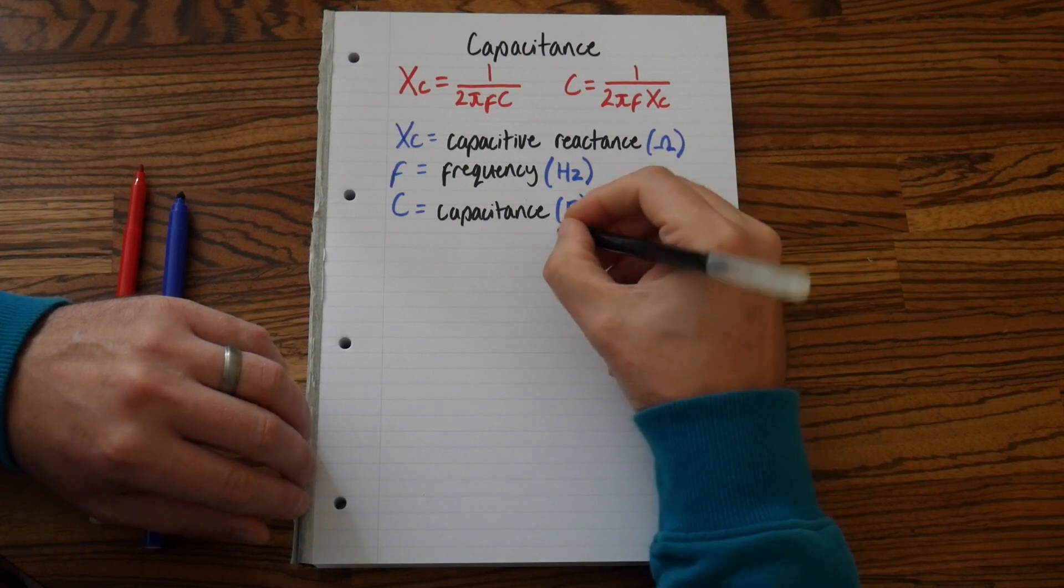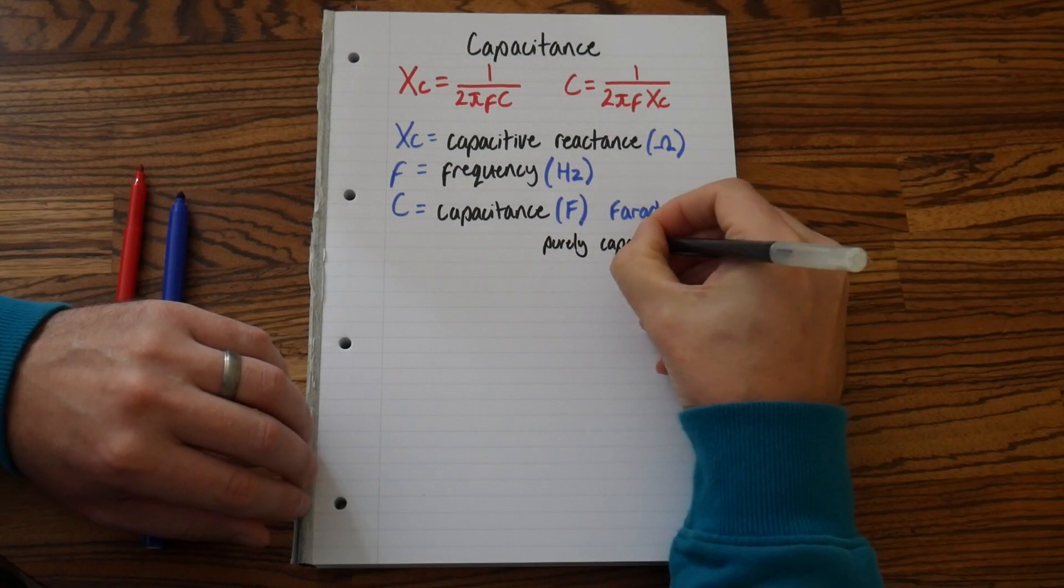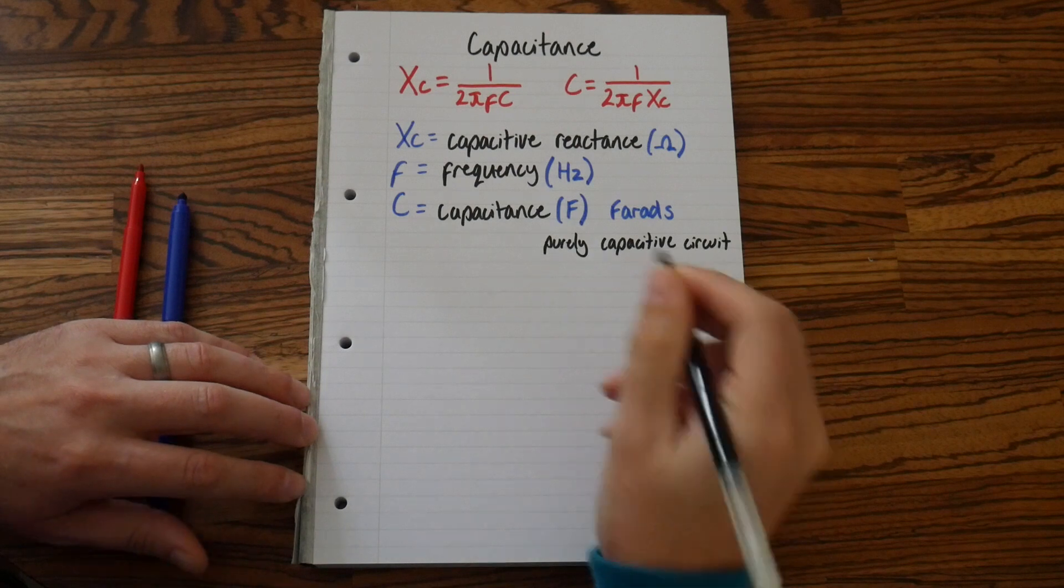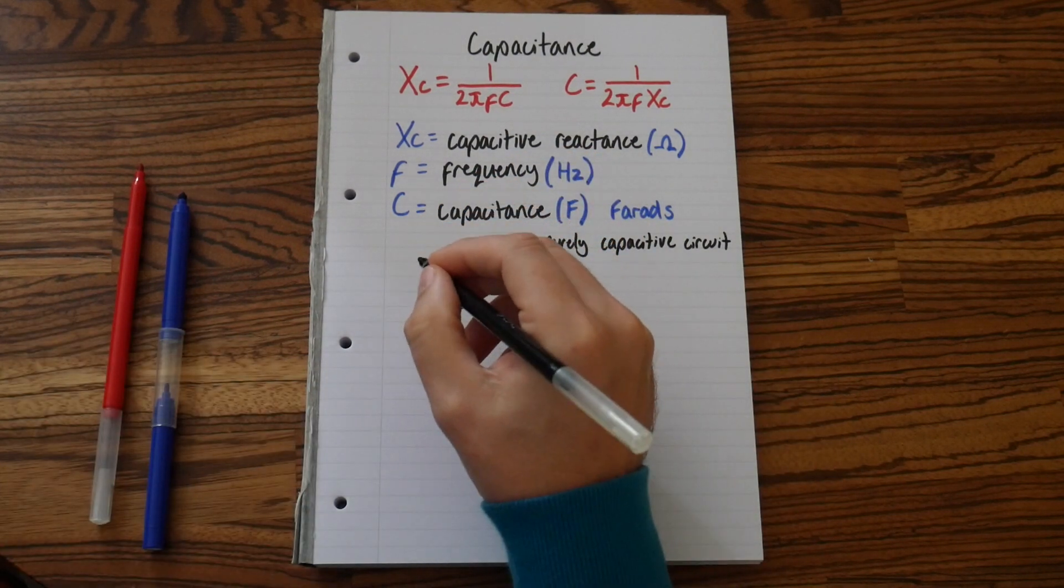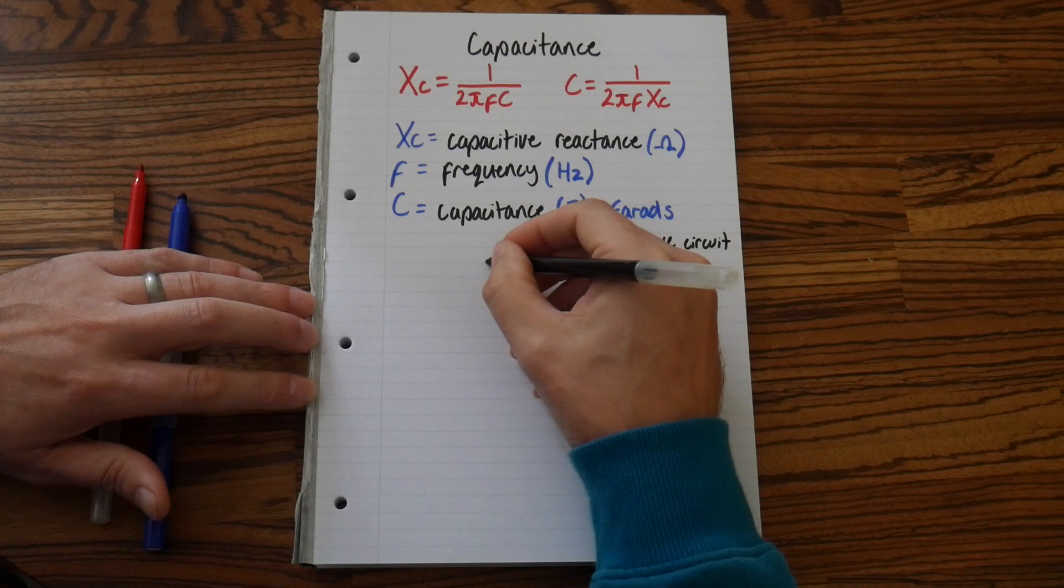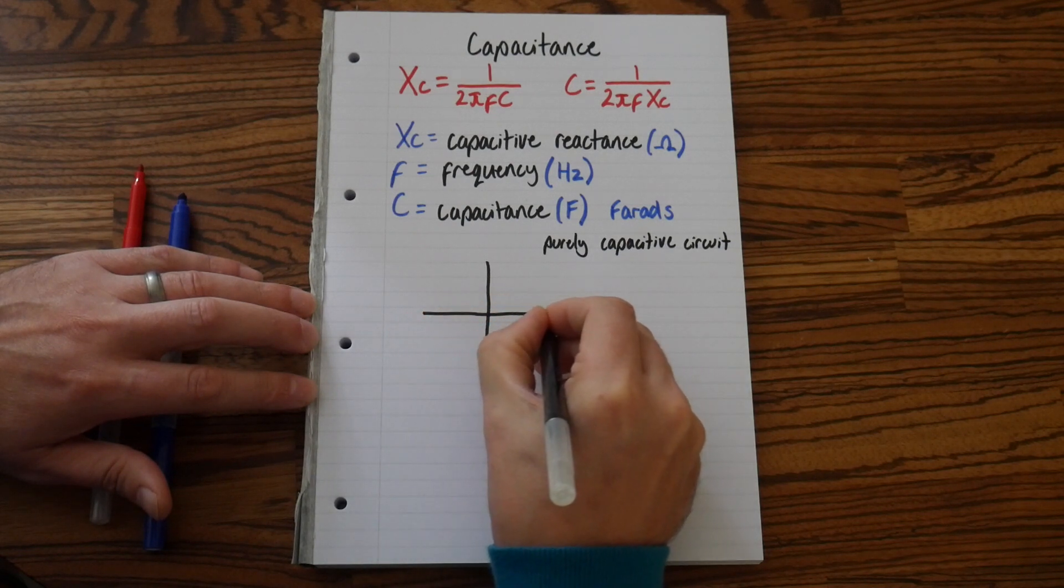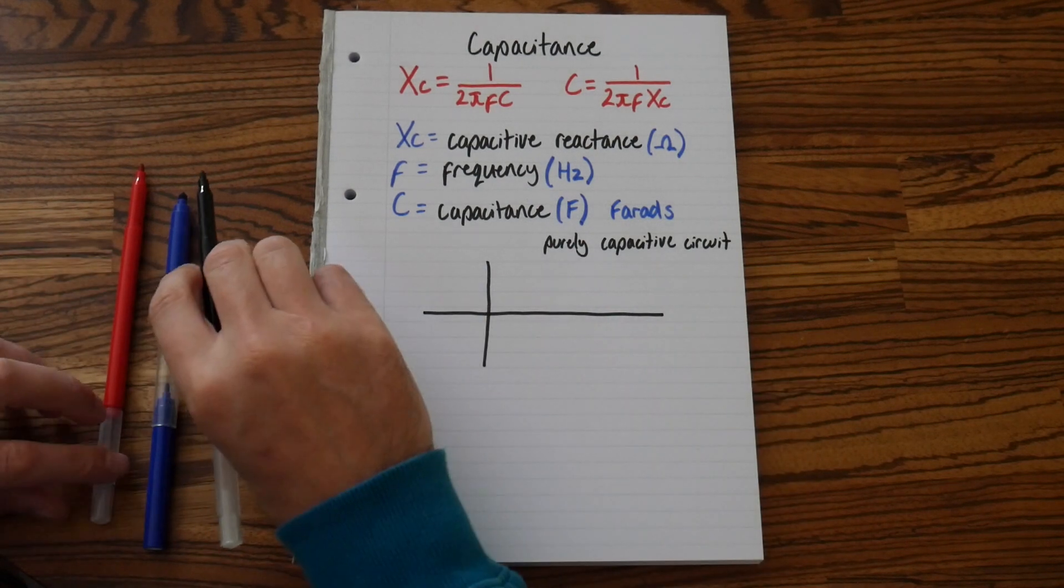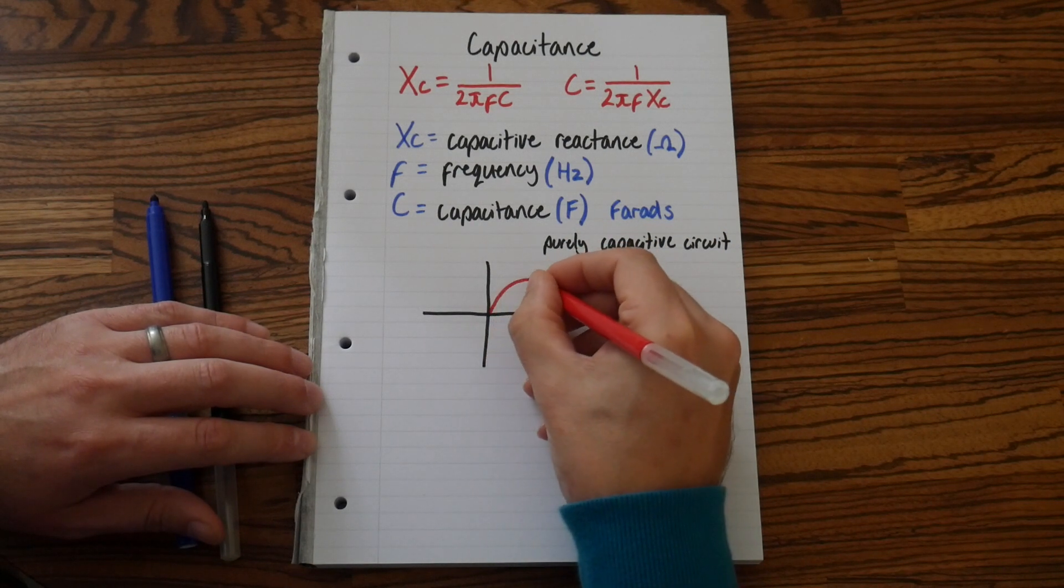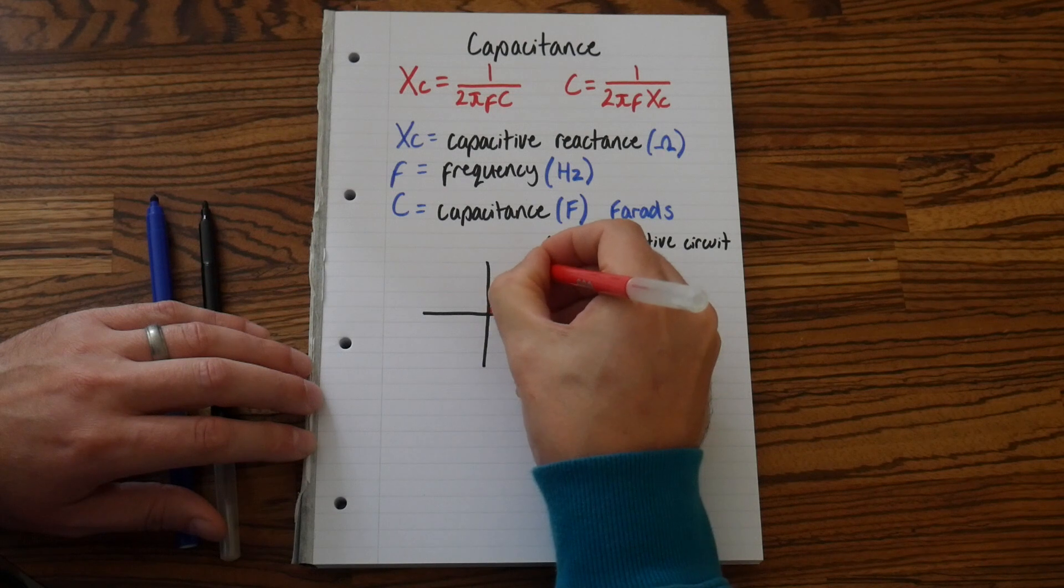So let's write in a purely capacitive circuit. We have, so let's draw our sine wave. So this one we need to kind of start a bit further over. Maybe do yours a bit nearer to them. Maybe you should think about using a ruler. So let's do our normal sine wave. And that is volts.